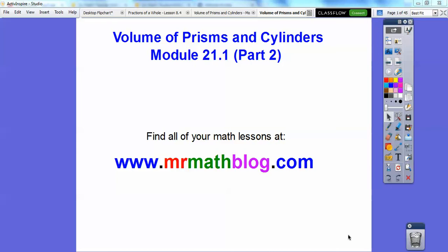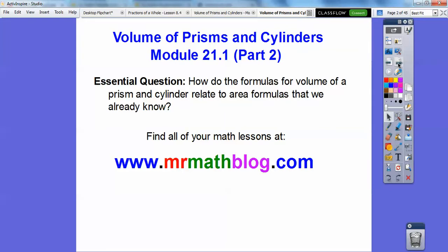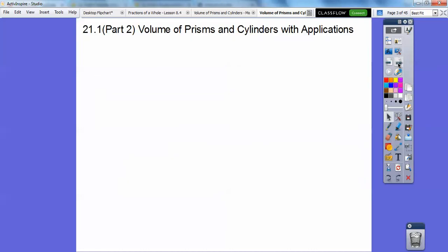Hey folks, you'll see why I split this into two lessons. From this lesson here, it would have been just a really full lesson. So this is Volume of Prisms and Cylinders, Module 21.1, Part 2. Same essential question: how do the formulas for volume of a prism and cylinder relate to our area formulas that we discovered before?